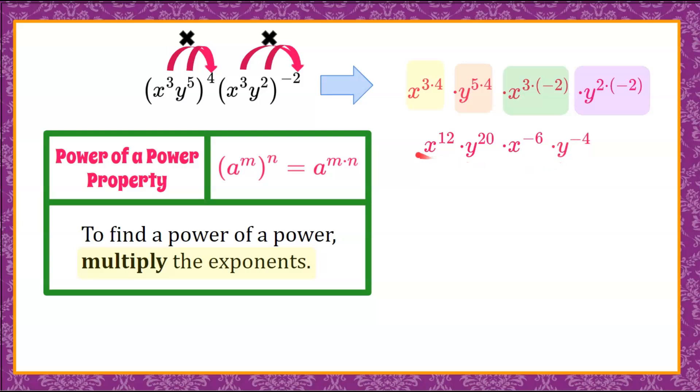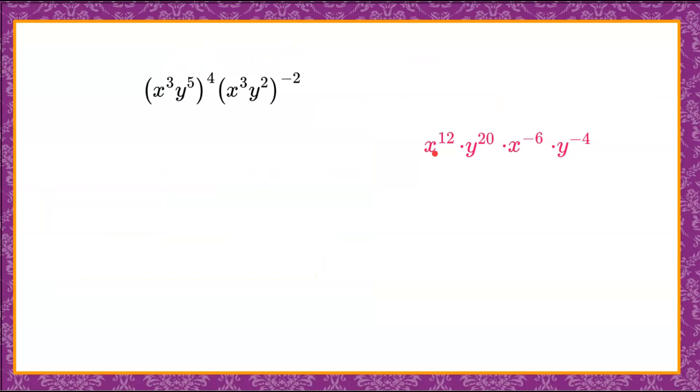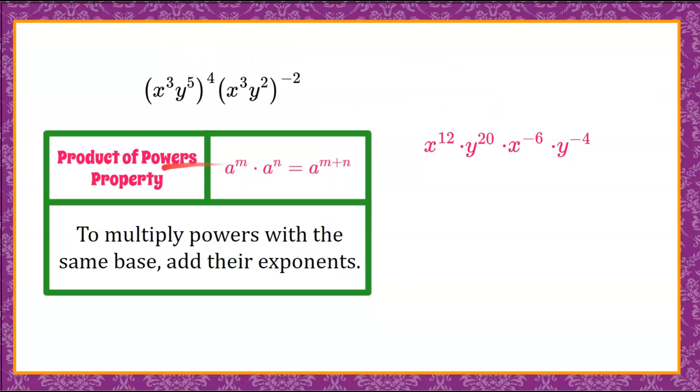Now we're going to apply the product of powers property. We have the same base with different exponents. x to the 12th, x to the negative 6th, we're going to add. So to multiply powers with the same base, we add their exponents.